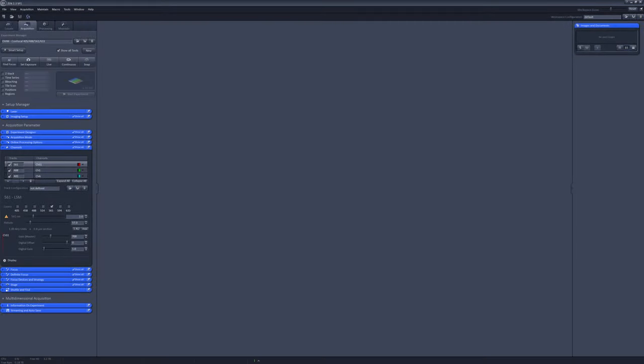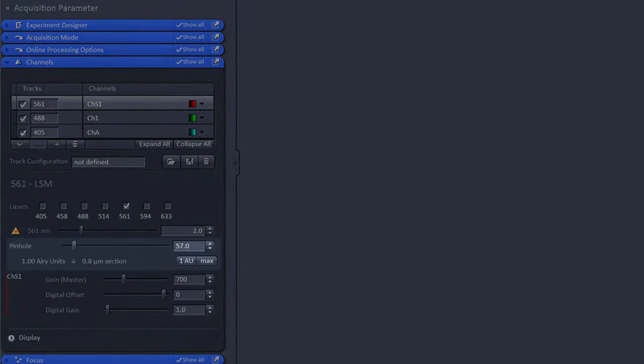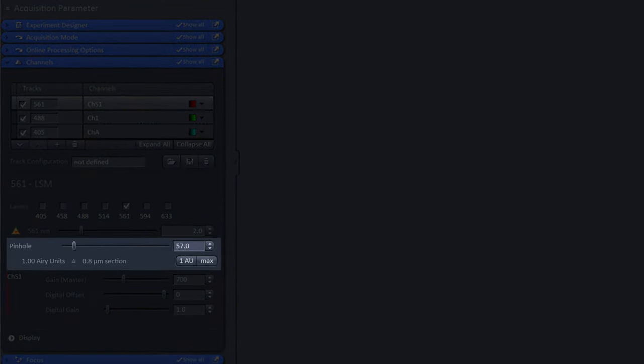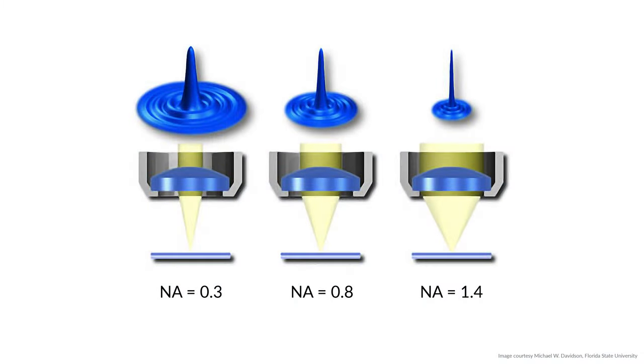The diameter of the pinhole is expressed in airy units on a confocal microscope. In the software control of a confocal, you will find your optical section thickness calculation accompanied by this airy unit calculation. Setting this value to one airy unit for your longest wavelength fluorophore is a common compromise value between the signal collected and the resolution of the system. In addition to the pinhole diameter, the numerical aperture, or NA, of the objective lens has the largest influence on overall resolution.